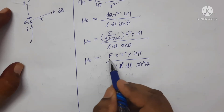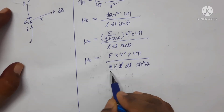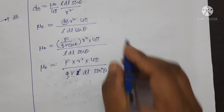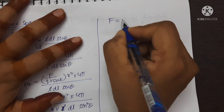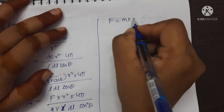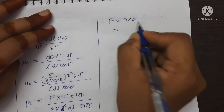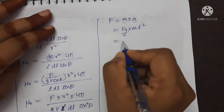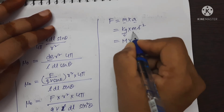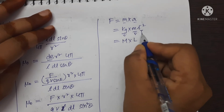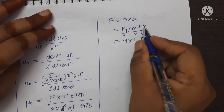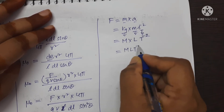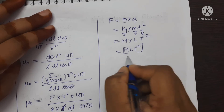Now, find separately the dimensions of force, where Q is the charge and V is the velocity, which we will substitute. Force equals mass into acceleration. The SI unit is kg × m/s². Writing the dimensions: kg is M, length is L, and second is T with power minus 2. So, the dimensional formula for force is [MLT⁻²].